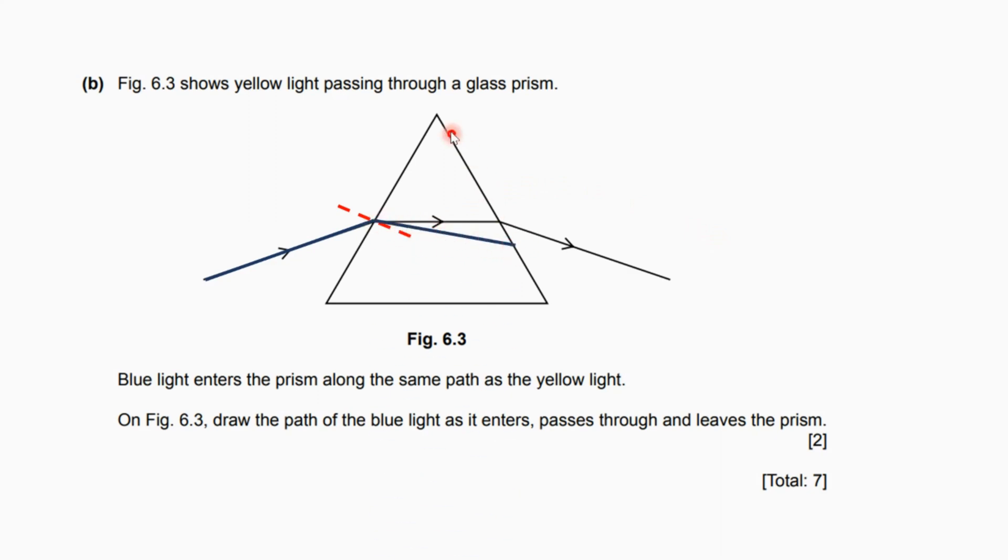And then at the other side of the glass prism, draw another normal which makes 90 degrees as I said before, and then it refracted away from the normal, makes an increase in the angle of emergence.